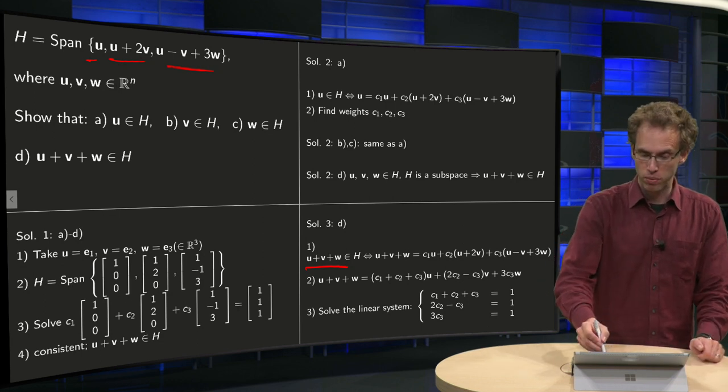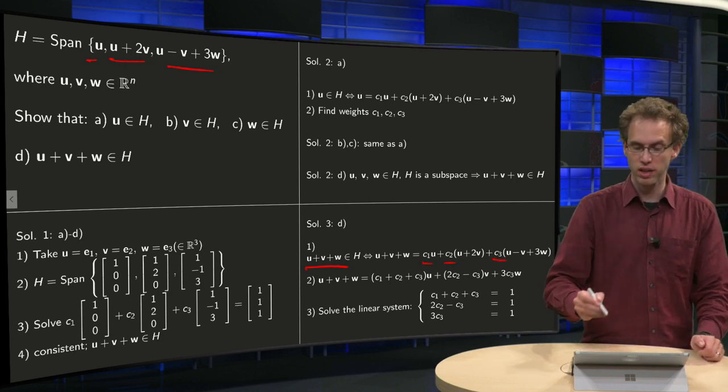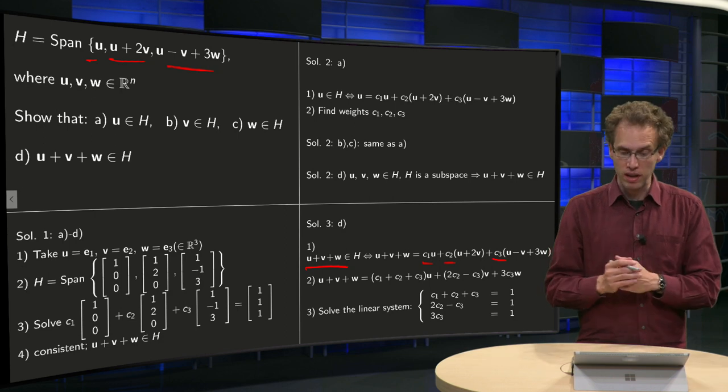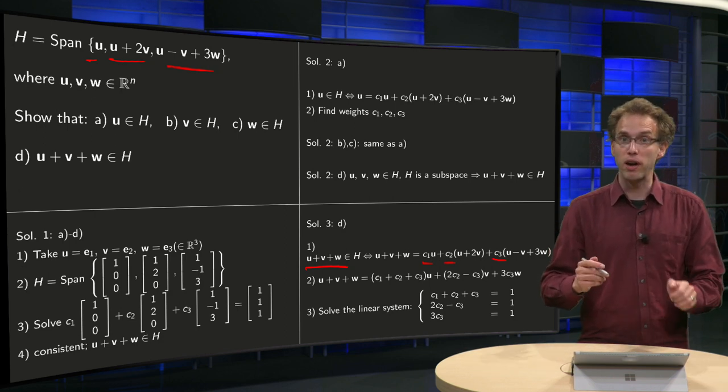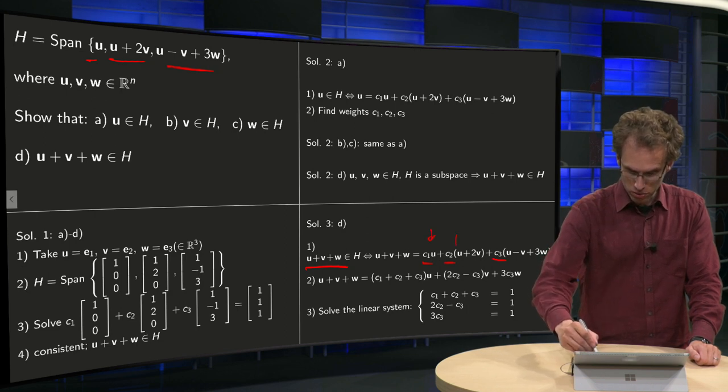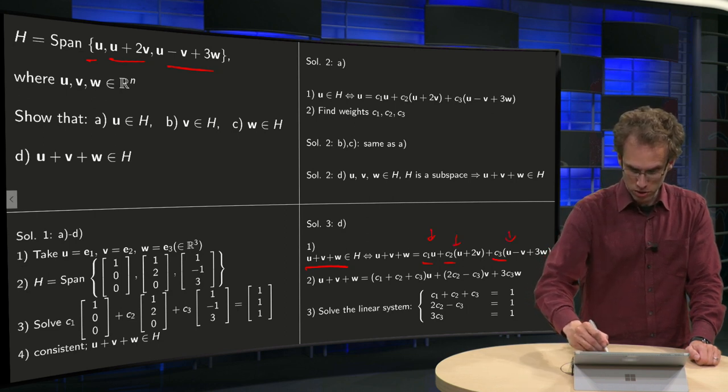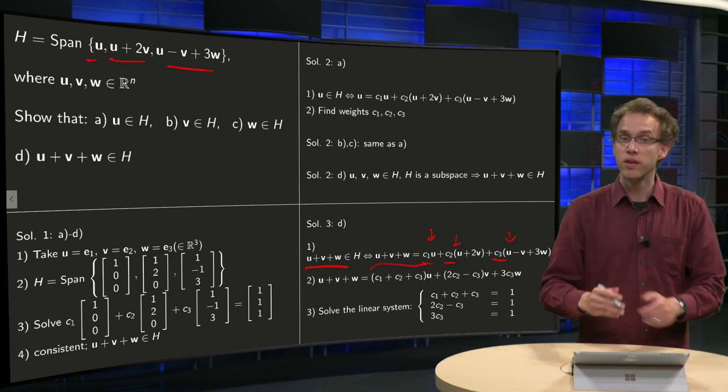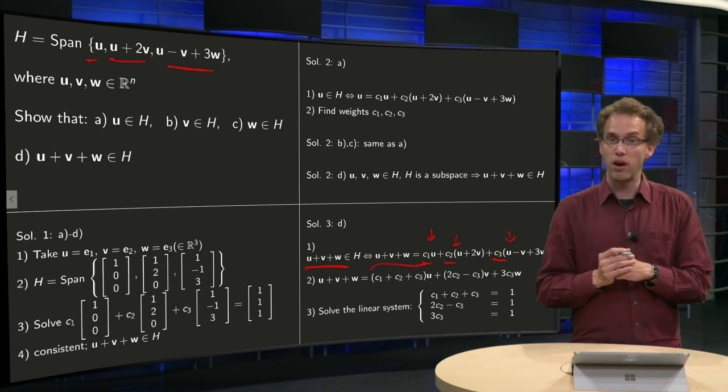So you have to find weights C1, C2 and C3. Then you rewrite a bit, combine all terms with U, so C1 times U plus C2 times U plus C3 times U, so that's this term, and for the others as well.